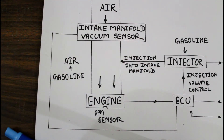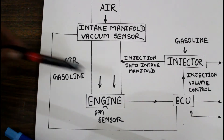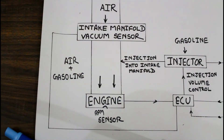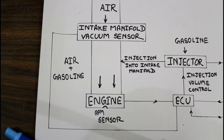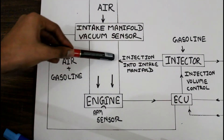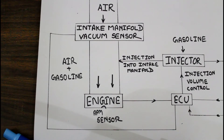The speed sensor also sends information about the RPM of the engine to the ECU. The ECU in turn sends the command to the injector to regulate the amount of gasoline supply for injection. When the injector sprays fuel into the intake manifold, the gasoline mixes with the air and the mixture enters the cylinder.